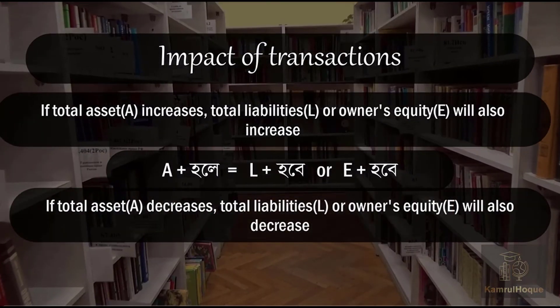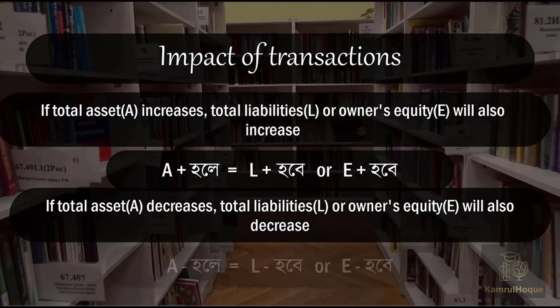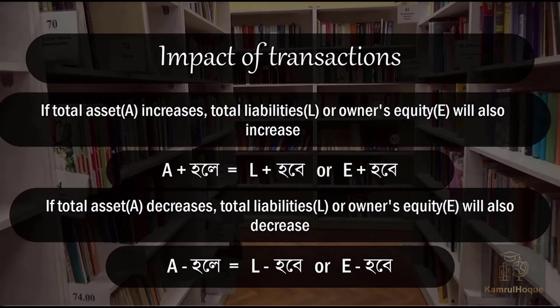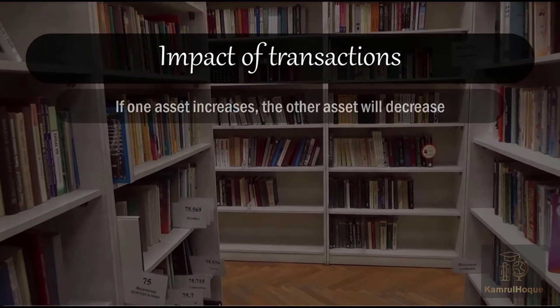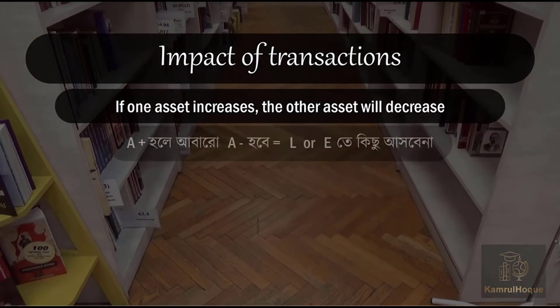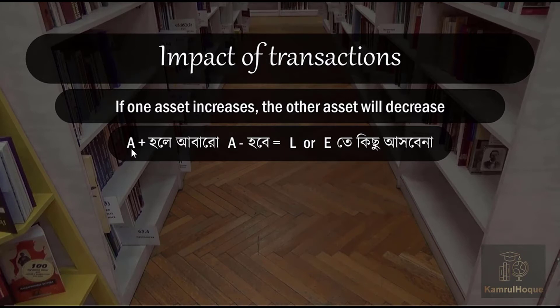Similarly, if total assets decrease, total liabilities or owner's equity will also decrease. In the equation, either liability or equity will be minus. Also, if one asset increases, the other asset will decrease — meaning the total remains balanced.